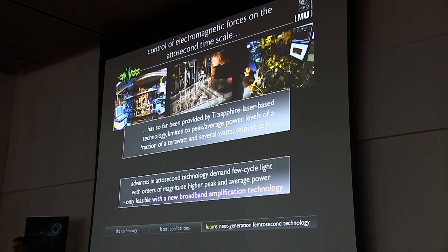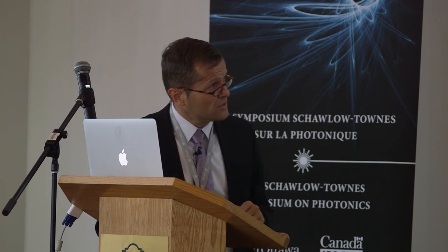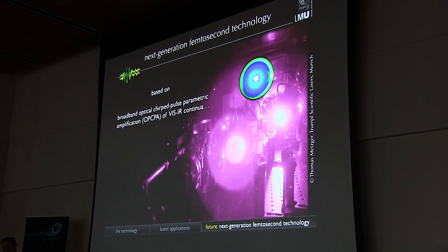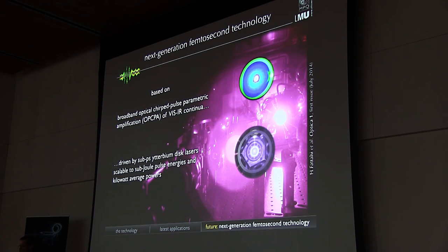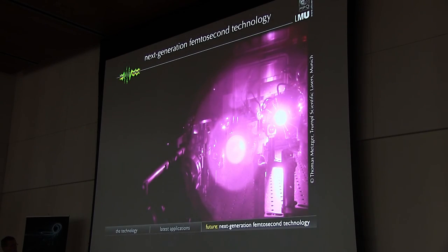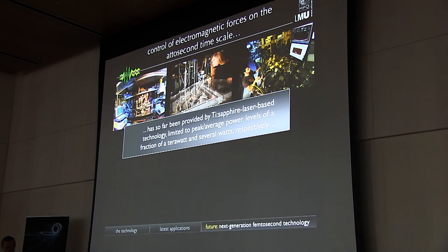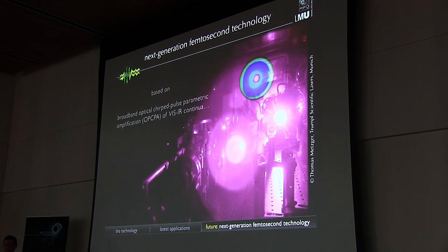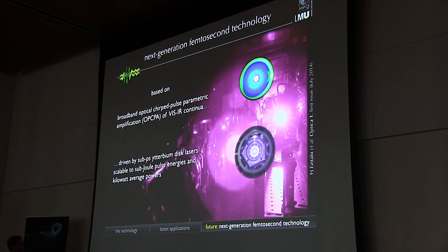So we believe that advances in attosecond technology demand few cycle light with orders of magnitude higher peak and average power, and this is only feasible with new broadband amplification technology. And now, according to our conviction, this new technology is likely to be... Or the computer is too slow. Sorry. Somehow there is a big delay here between what I'm seeing here and what's appearing there. Okay. Yes, so we believe that this next generation technology is going to be based on broadband optical chirped pulse parametric amplification of visible infrared continua and is going to be driven by sub-picosecond ytterbium disc lasers that are scalable to subjoule pulse energies and kilowatt average powers.